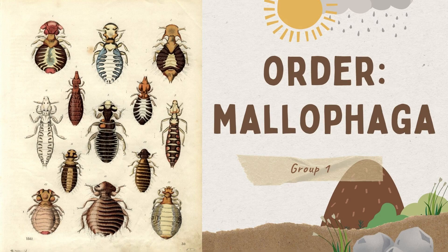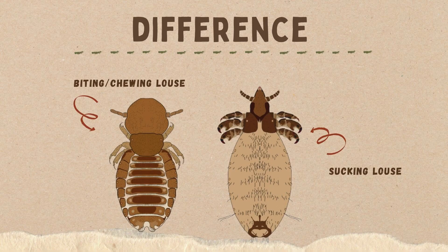Before we discuss Order Malophaga, let us first review its differences from Order Anopleura. Their main difference is their mouthparts. Order Malophaga has biting and chewing mouthparts, while Order Anopleura has piercing and sucking mouthparts.